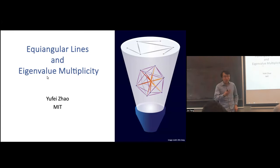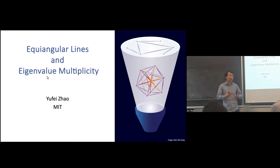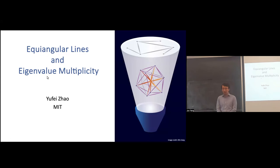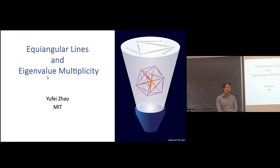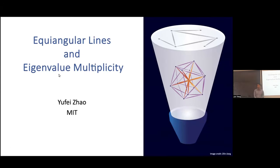I'll tell you about some work I've been doing over the past few years on equiangular lines, a problem in discrete geometry, and eigenvalue multiplicity, and how these two topics are connected to each other.